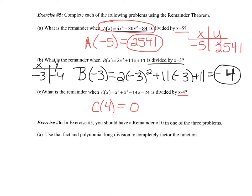The next question says, in exercise 5, you should have a remainder of 0 in one of the three problems. And that's true of this problem. Now, what does that tell us? It tells us that the function is not off from having x - 4 as a factor. x - 4 is a factor of c(x). So it says, use that fact in polynomial long division to completely factor the function.